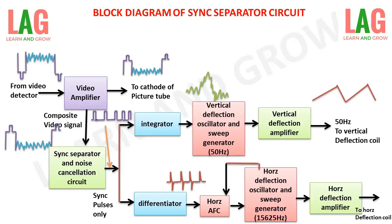The horizontal deflection pulses are used for scanning the picture signal from left to right of the picture tube, and the beam is retraced back on the screen. The waveform obtained at the horizontal deflection amplifier is a sawtooth wave.